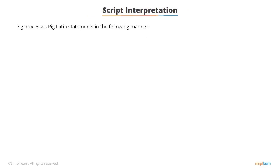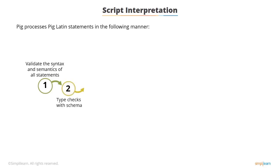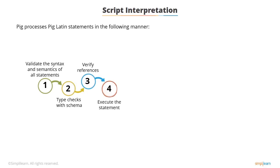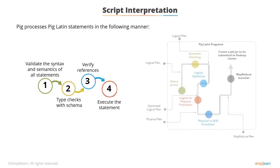PIG processes PIG Latin statements in the following manner. First, PIG validates the syntax and semantics of all statements. Second, it type checks with schema. Third, it verifies references. PIG performs limited optimization before execution. Fourth, if PIG encounters a dump or store, it will execute the statements. A PIG Latin script execution plan consists of logical, optimized logical, physical, and MapReduce plans.